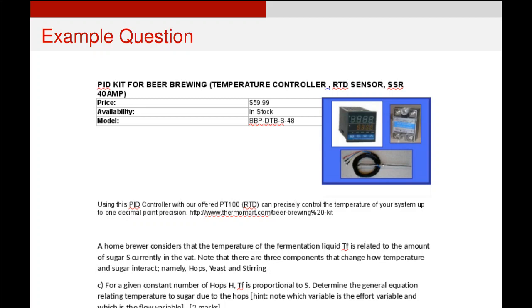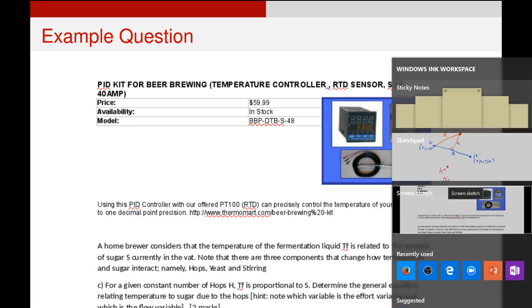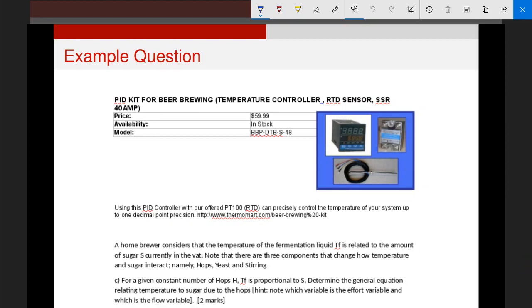So this is actually not too hard. Essentially, what we're trying to do is turn that from a written description into a mathematical relationship. So first we know that T of f is proportional to s. So what is the effort, and what is the flow? Well, what we assume in the system is that the amount of sugar in the vat is driving the fermentation temperature. So sugar s is the effort, and tf, the fermentation temperature, is the flow variable. And so all that means is that the general form is tf is proportional to s. And if we want to turn that from a general to a specific form, what we would go is tf is equal to ks, where k is our constant of proportionality.